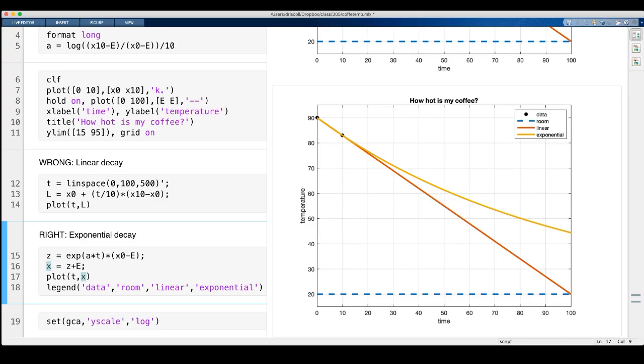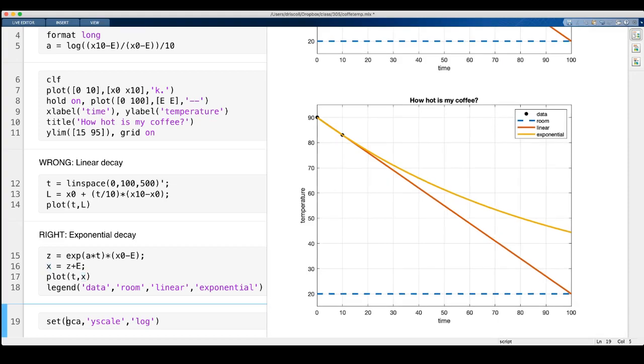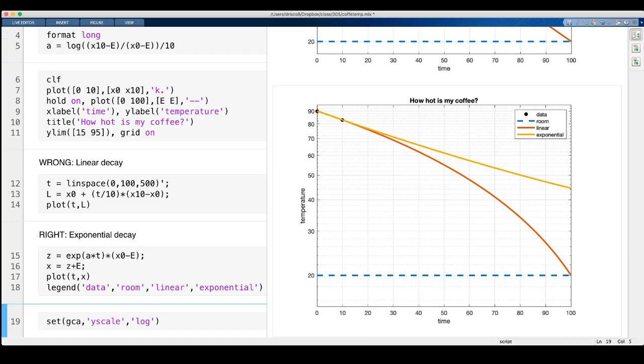Of course, all of this looks even more natural on a log scale. So if we set a log scale in the y direction, then an exponential solution is just a straight line.